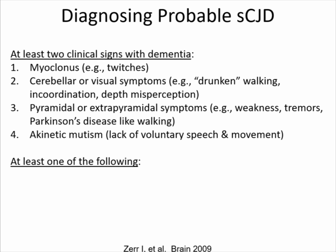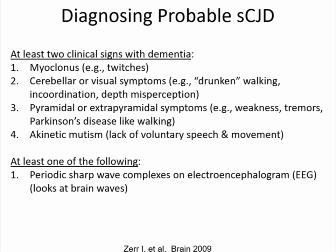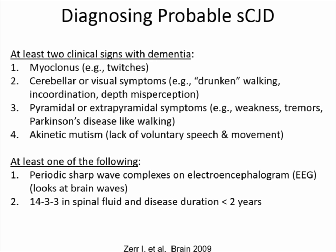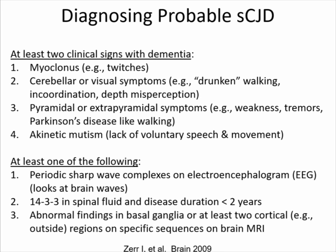We use a variety of diagnostic tests. One is the electroencephalogram or EEG, which looks at brain waves — there's a finding called periodic sharp wave complexes that can be suggestive of CJD. There are also a variety of spinal fluid tests; the WHO classification currently includes one called 14-3-3. The brain MRI can also be suggestive of CJD by showing abnormalities on a specific sequence called diffusion-weighted imaging.